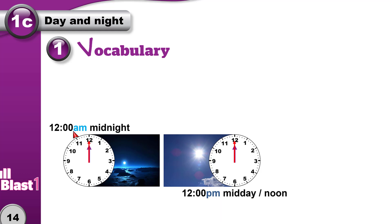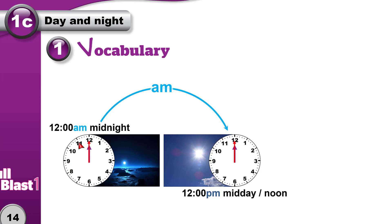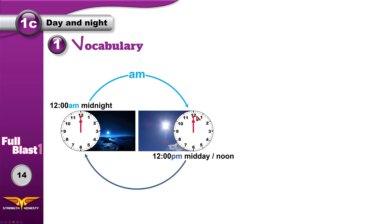From 12 a.m. to 12 p.m. is the daytime — we use a.m. After 12 a.m., it's 1 a.m., 2 a.m., 3, 4, 5, 6, 7, 8, 9, 10, 11 a.m. And then comes 12 p.m. at noon. From 12 p.m. till 12 a.m. is the night time.